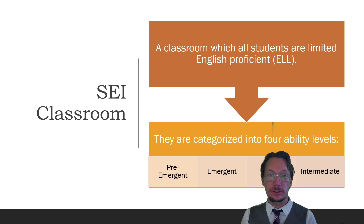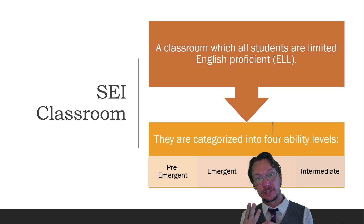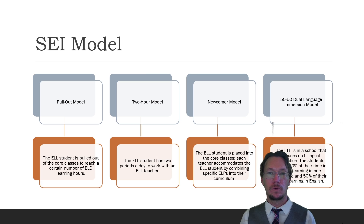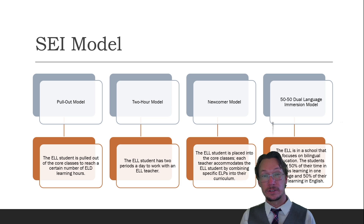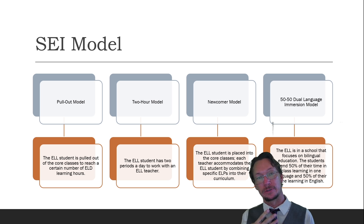An SEI classroom is where all students are of limited English proficiency. In the classroom, there are four categories of ability levels: pre-emergent, emergent, basic, and intermediate. Once placed into one of these categories, the school uses an SEI model to teach them. As of the 2020-21 school year, there are four different models to choose from: the pull-out model, the two-hour model, the newcomer model, and the 50-50 dual language immersion model.